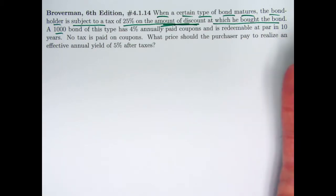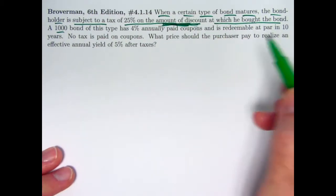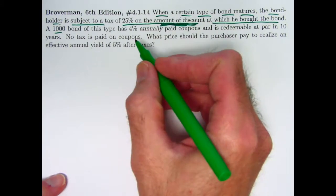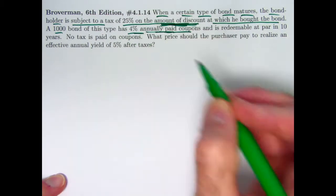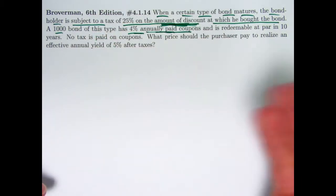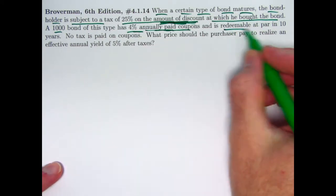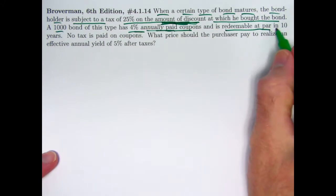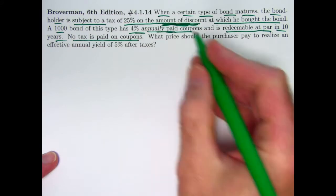For example, if the bondholder paid $900, the amount of discount would be $100 and the amount of taxes would be $25. The bond has 4% annually paid coupons, so 4% of $1,000 is $40 — the coupons will be $40 once per year. It is redeemable at par, at face value, so you will get $1,000 in 10 years. There is no tax on the coupons.